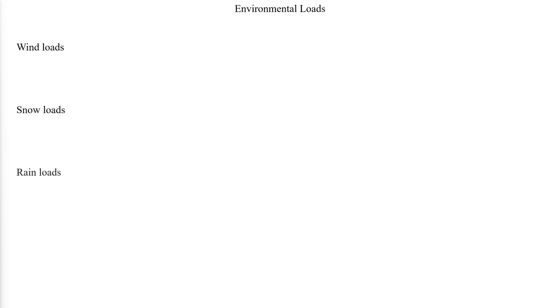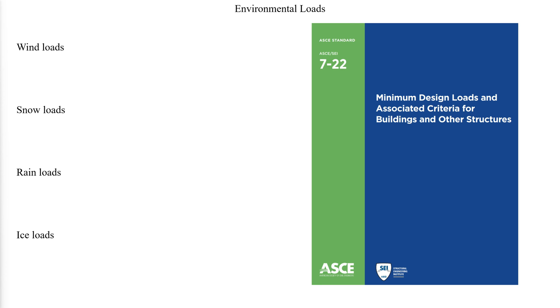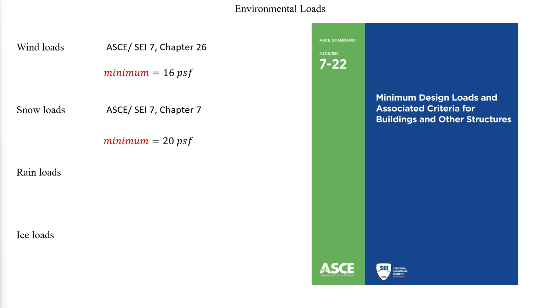For exterior stairways, additional loadings should be considered, including wind loads, snow loads, rain loads, and ice loads. Wind loads should be based on the requirements of ASCE 7 Chapter 26, with a minimum wind load of 16 pounds per square foot. Snow loads should be based on the requirements of ASCE 7 Chapter 7, with a minimum snow load of 20 pounds per square foot.